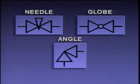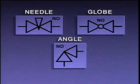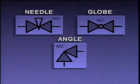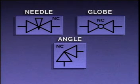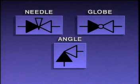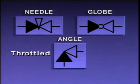If the symbols look like this or have the letters NO beside them, the valves are normally open. If the symbols are filled in or have the letters NC beside them, the valves are normally closed. The symbol may also be shown partially filled in. When the symbol is shown this way, the valve is in a throttled position.